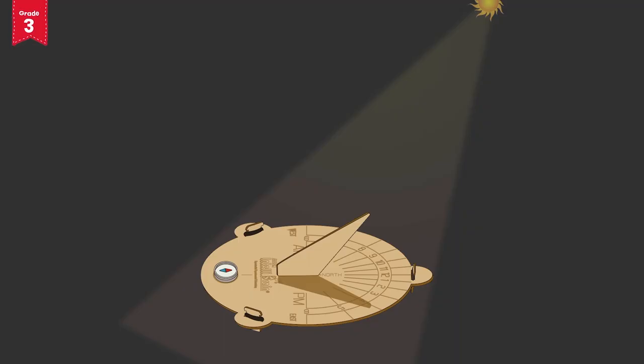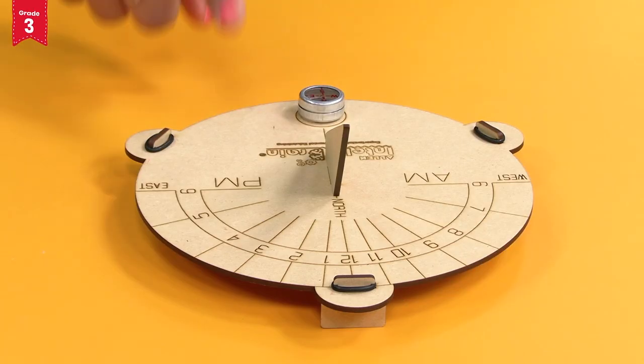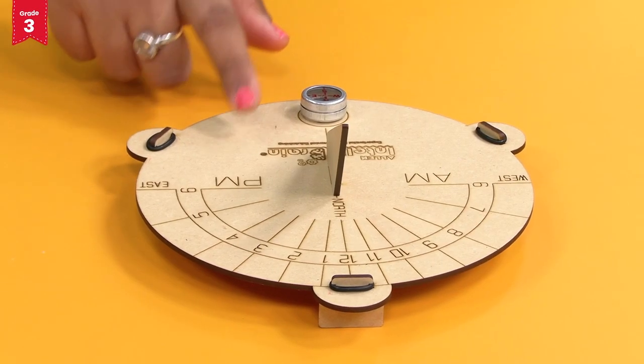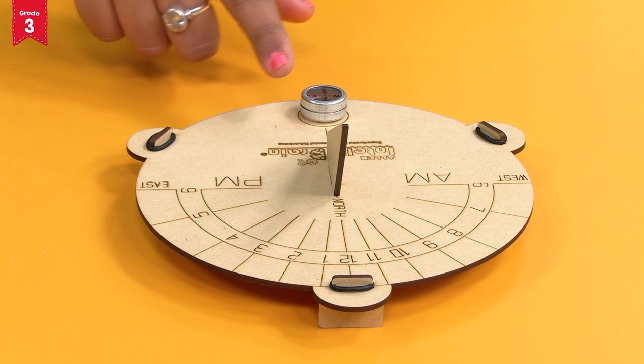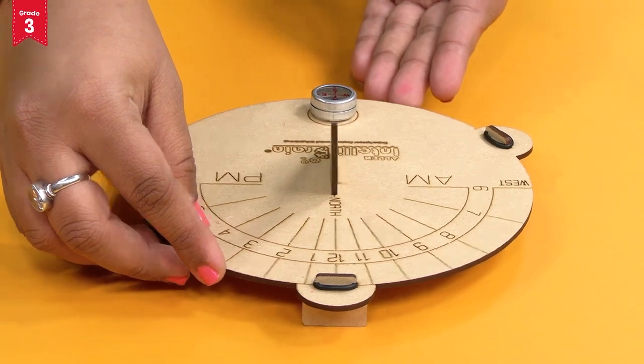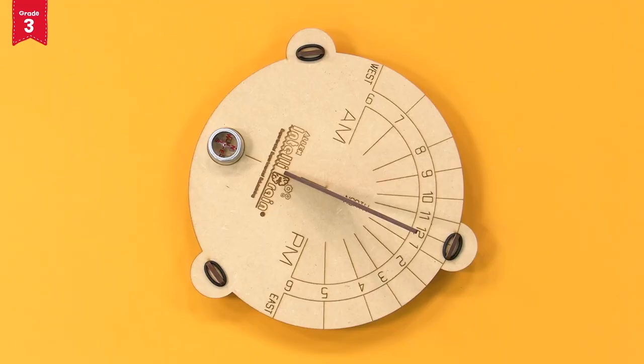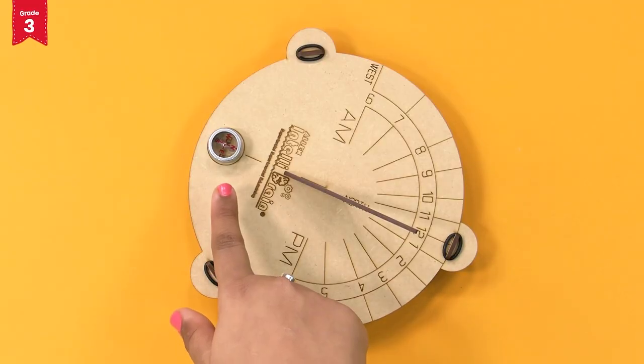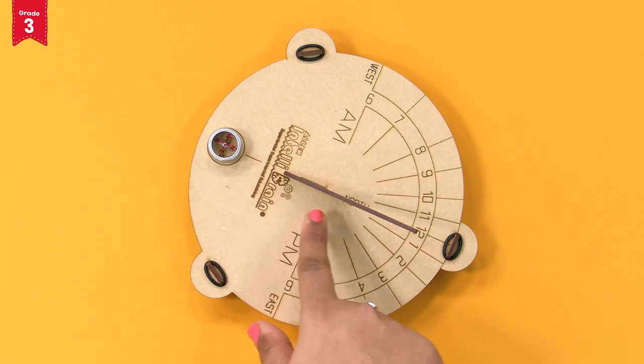Now, place this outside in sunlight. Rotate the model such that the needle on the compass aligns with the north marked on the sundial like this. The compass needle should point straight towards the shadow maker on the sundial.